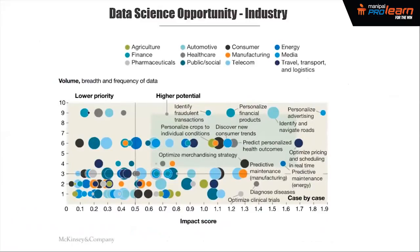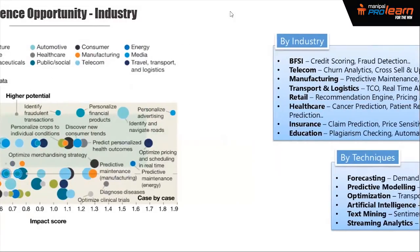It doesn't matter what industry you come from — there are use cases everywhere. In agriculture, drones can capture humidity and soil moisture data, and a machine learning algorithm can tell you what crop to sow for maximum productivity. Similarly, in automotive, healthcare, and telecom, there are thousands of use cases where machine learning can be applied, as referenced in McKinsey research.